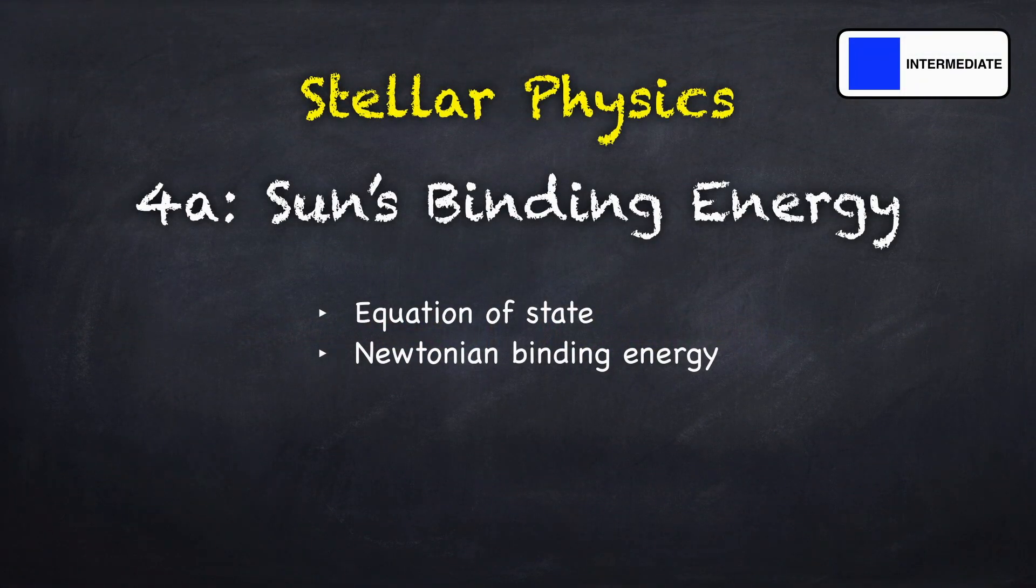Welcome to Stellar Physics 4a. In this video we're going to use the results found in the previous chapter to find the sun's binding energy. We'll first come up with an equation of state for the material in the sun, and then we'll calculate the binding energy assuming Newtonian gravity.